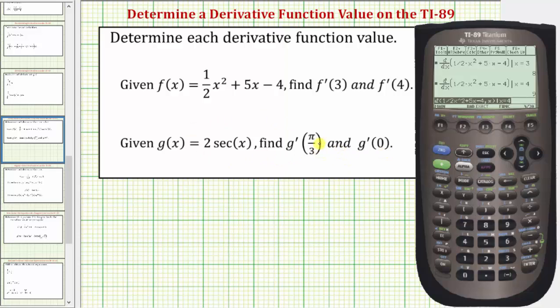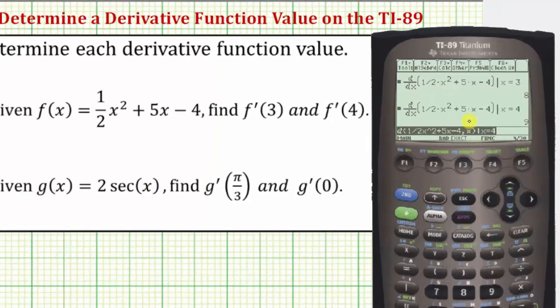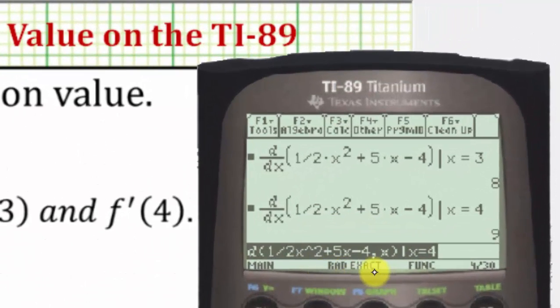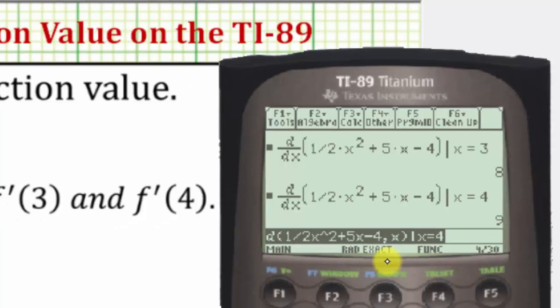Because we have a trig function and this angle is in radians, we want to make sure the calculator is in radian mode as well as auto or exact mode. Looking at the bottom of the screen, RAD means radians, and EXACT means we're in exact mode. We are in the correct mode,